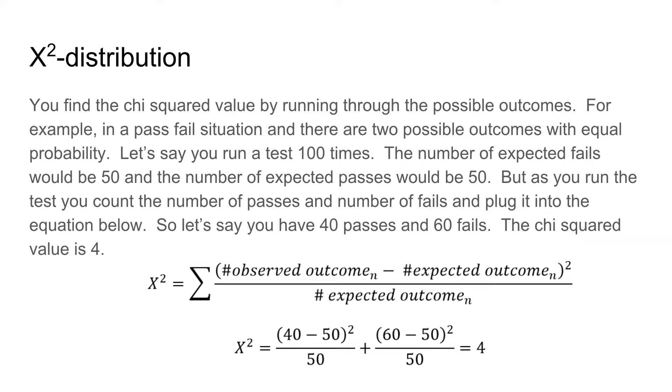For example, in a pass-fail situation, there are two possible outcomes with equal probability. Let's say you run a test 100 times. The number of expected fails will be 50 and the number of expected passes will be 50, assuming they're equally weighted.